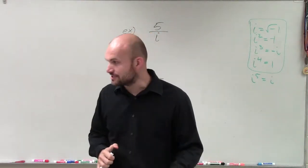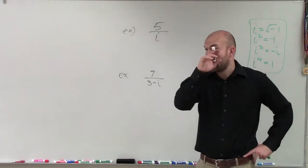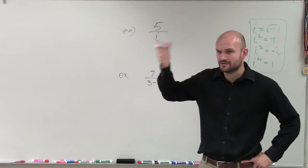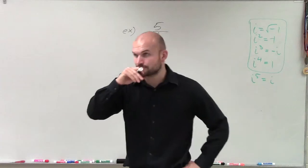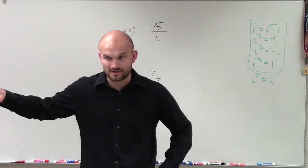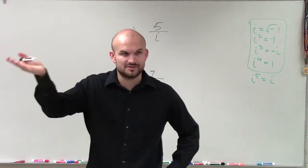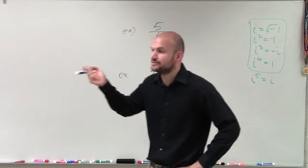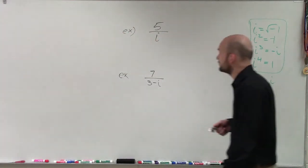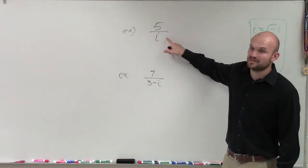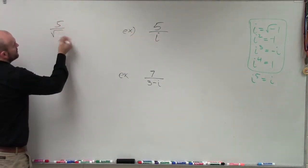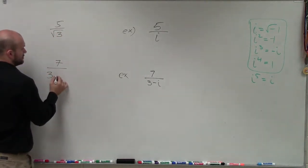Now let's talk about division. If I have 5 over i, I'm dividing a real number by an imaginary number — that seems weird. It's like dividing by an irrational number such as pi, which goes on forever. We don't like irrational or imaginary numbers in the denominator. Remember when we had 5 over the square root of 3 or 7 over 3 minus the square root of 3? We multiplied the numerator and denominator by the square root to eliminate it from the bottom.